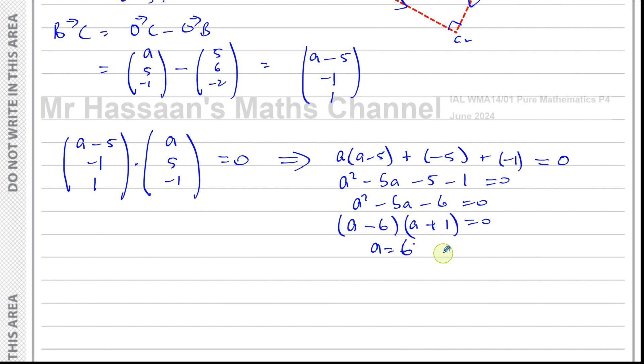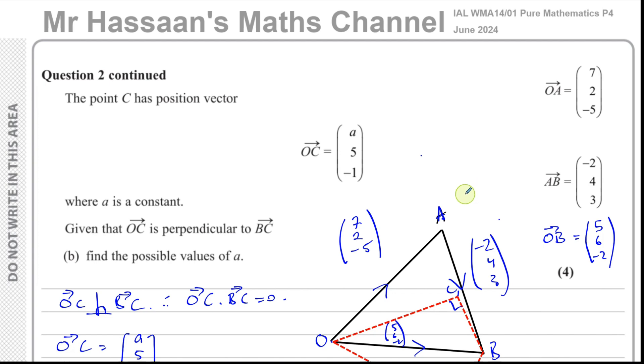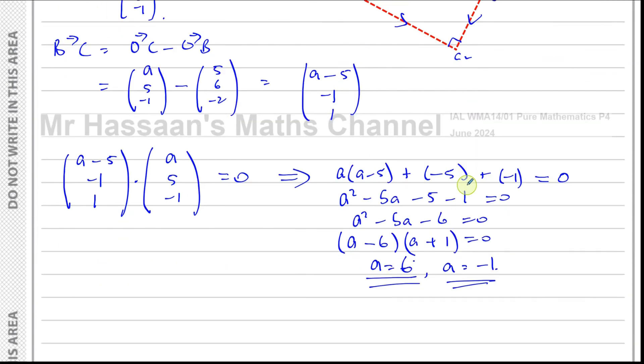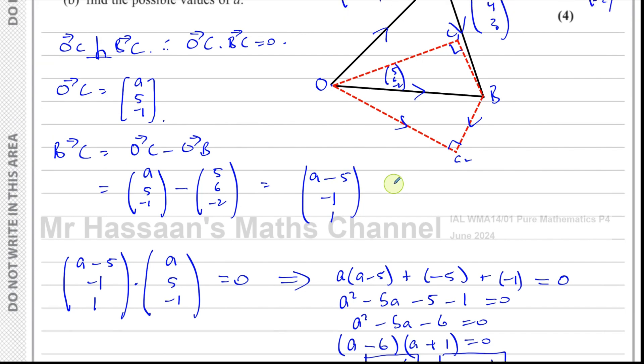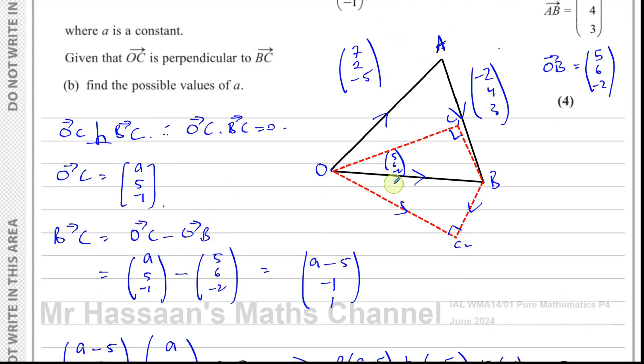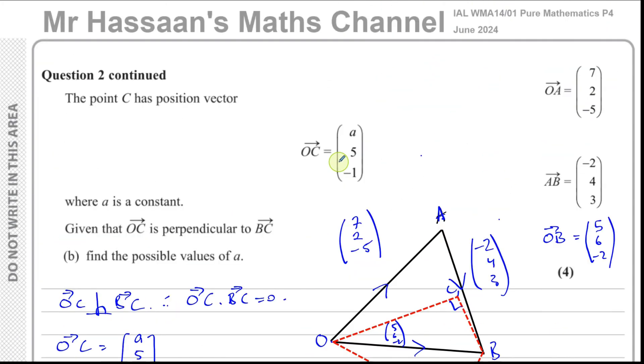Therefore a could either be positive 6 or a could be negative 1. Those are the two possible values of a for which OC is perpendicular to BC. So we've got the answers to the question. It's just using the fact that they are perpendicular and their dot product will equal 0. So there's the answer to question 2 part B as well.